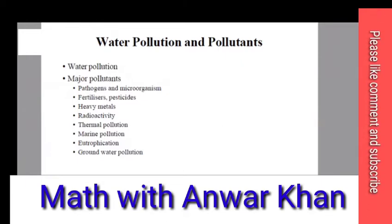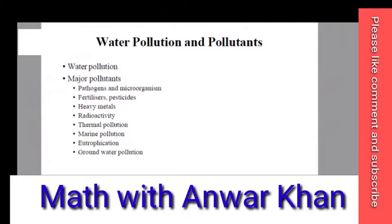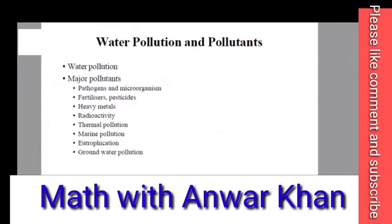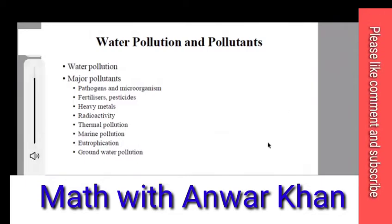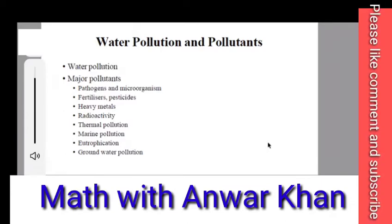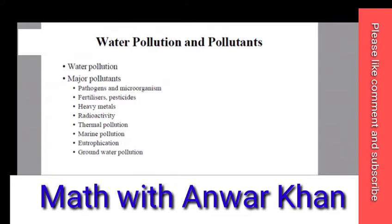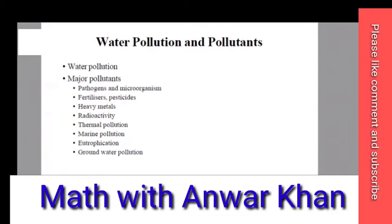Then comes Eutrophication. Eutrophication is when there are more nutrients and minerals in the water. This is a new term — you need to know how to spell and call it Eutrophication. For example, if there are excess minerals like nitrogen and phosphorus or other nutrients in the water, we call it Eutrophication.